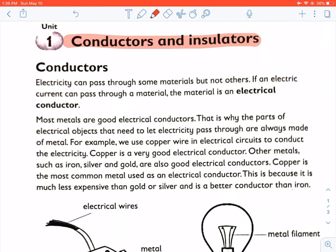Conductors. Electricity can pass through some materials but not others. If an electric current can pass through a material, the material is an electrical conductor. Most metals are good electrical conductors.